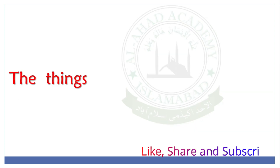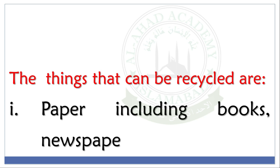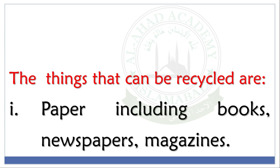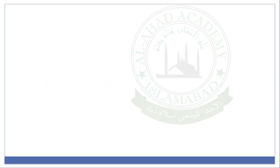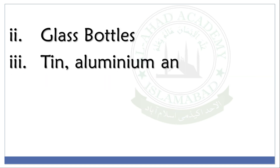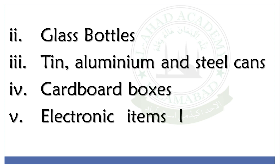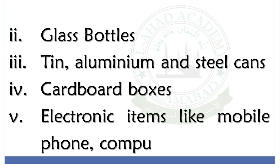The things that can be recycled are: paper including books, newspapers, magazines; glass bottles; tin, aluminium and steel cans; cardboard boxes; and electronic items like mobile phones, computers, etc.